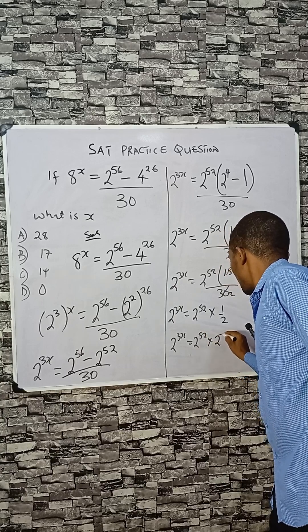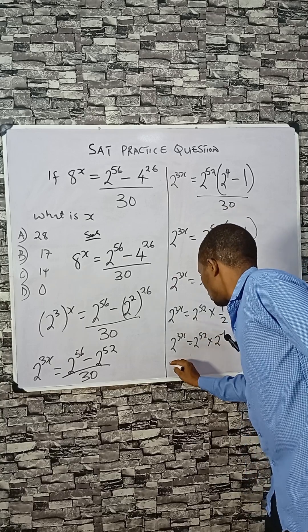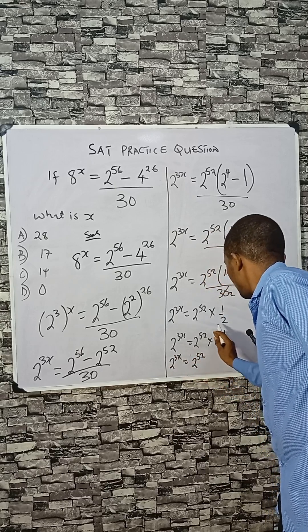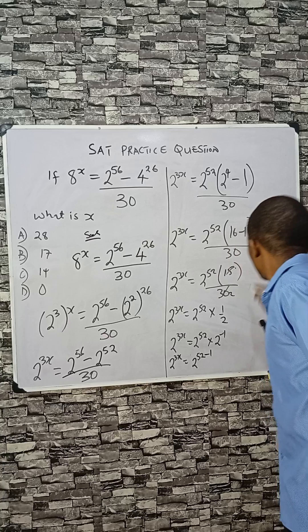Times 2 raised to power minus 1. If you check closely, we can do something there: 52 minus 1 there.